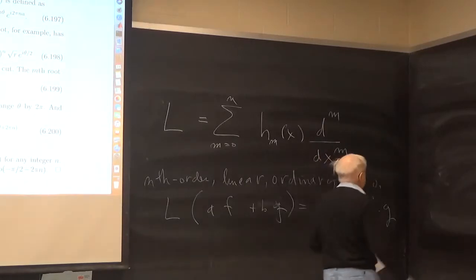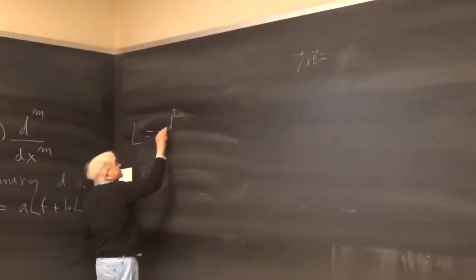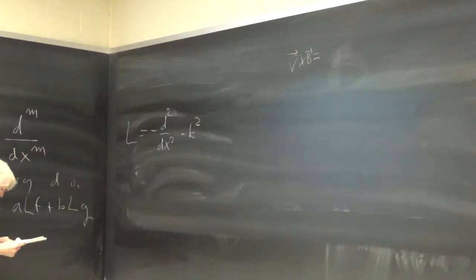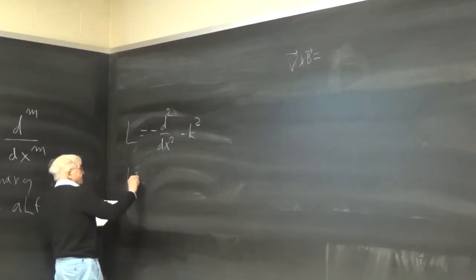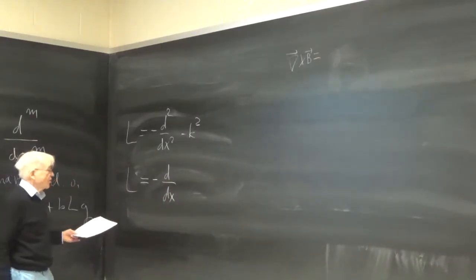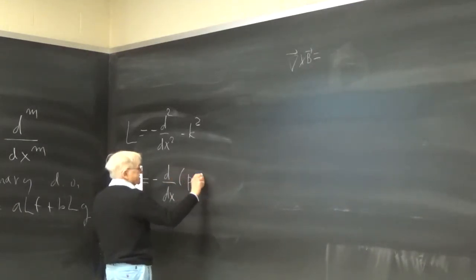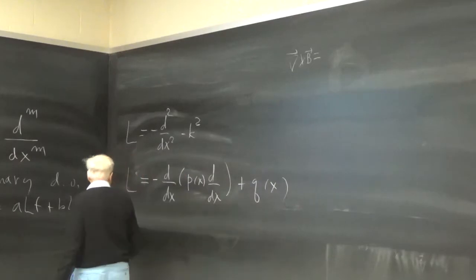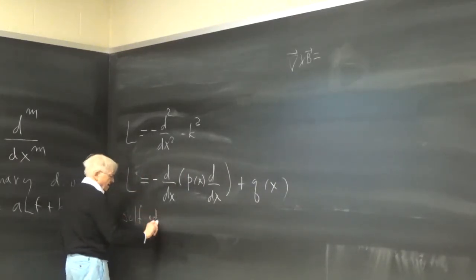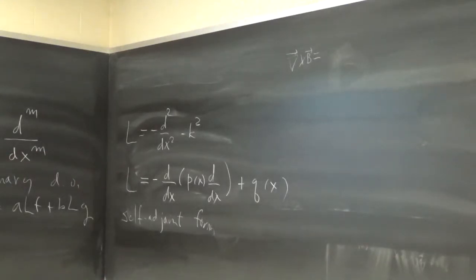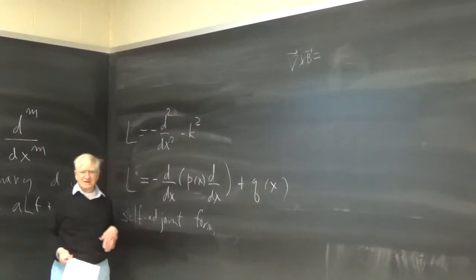A famous example is L equal to minus d²/dx² minus k², which is the harmonic case you've undoubtedly seen. It's sometimes nice to write second order linear ordinary differential operators in self-adjoint form: P(x) d/dx plus Q(x). We'll be talking about self-adjoint differential operators later — that'll be a couple of weeks from now.